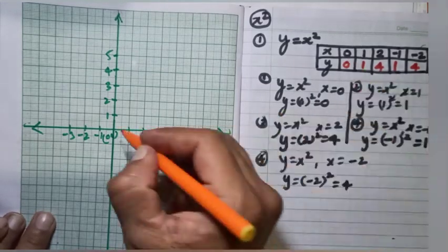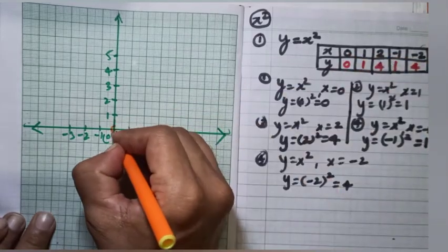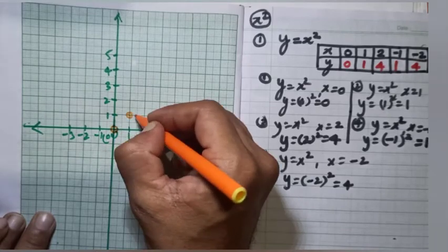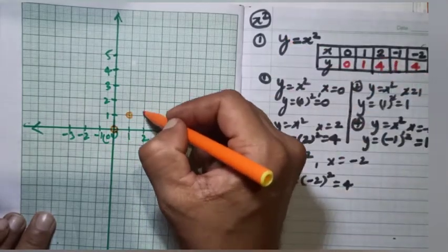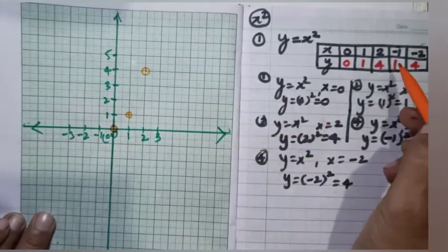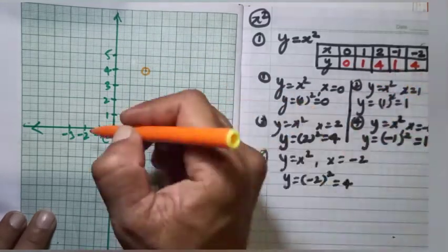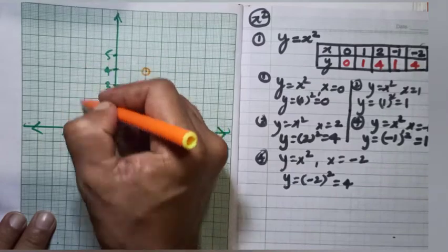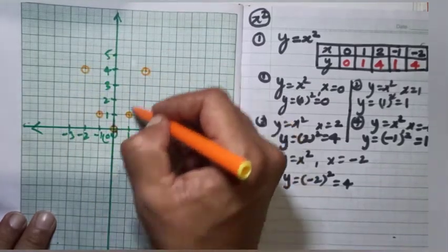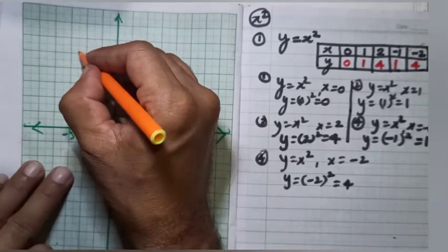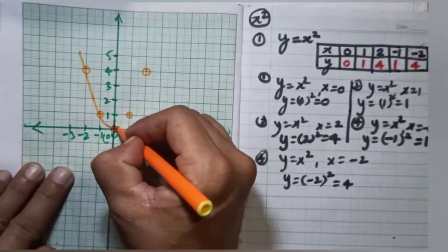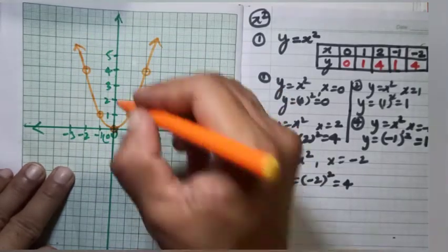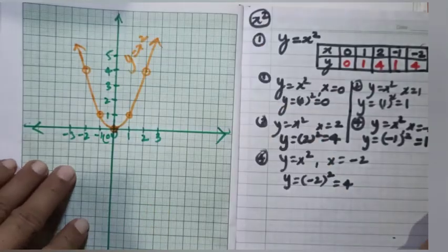For x equal to 0 we get y equal to 0, so we mark the origin. For x equal to 1 we get y equal to 1, and for x equal to 2 we get y equal to 4. On the negative side, for x equal to minus 1 we get positive 1, and for x equal to minus 2 we get positive 4. We then join these points with a smooth curve — not with a scale — because there are many values in between, and we show arrows since the graph continues to infinity.